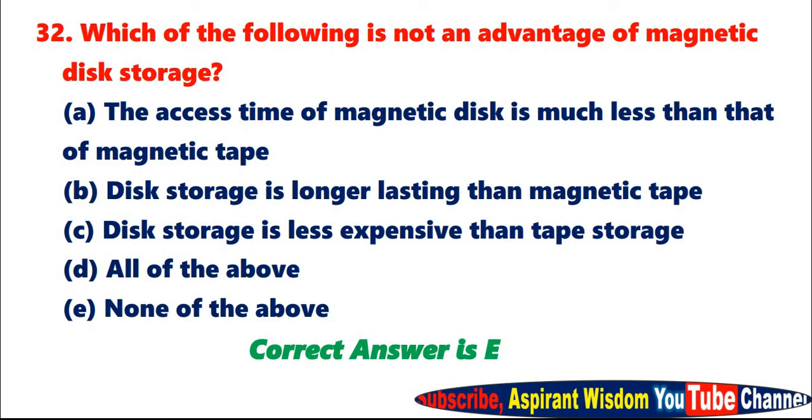Question 32: Which of the following is not an advantage of magnetic disk storage? A. The access time of magnetic disk is much less than that of magnetic tape. B. Disk storage is longer lasting than magnetic tape. C. Disk storage is less expensive than tape storage. D. All of the above. E. None of the above. Correct answer is E.